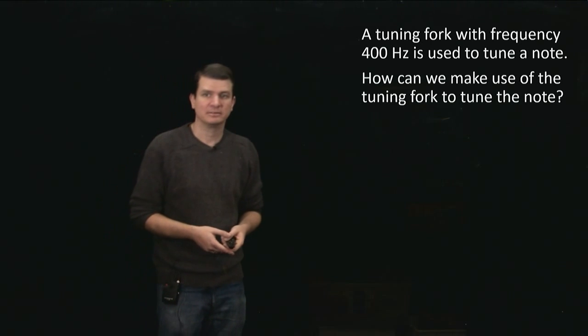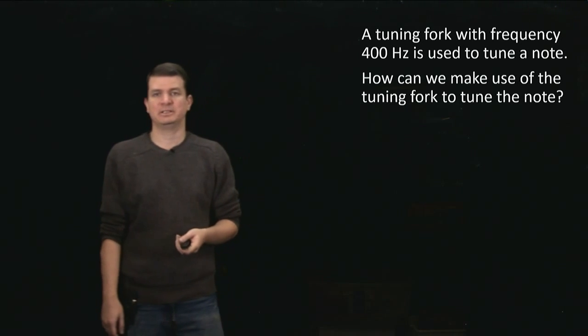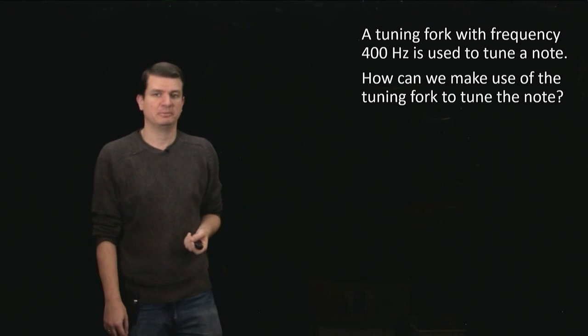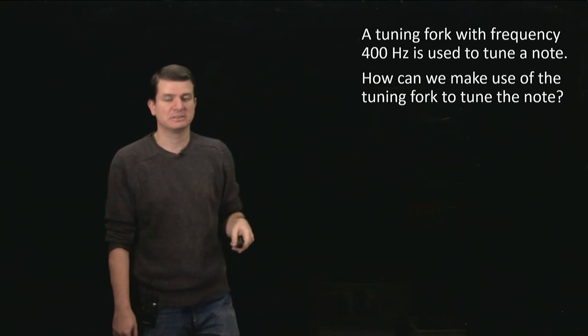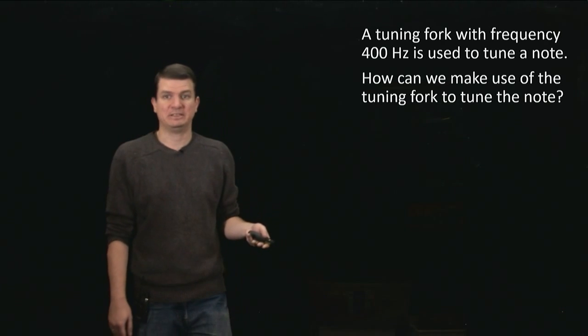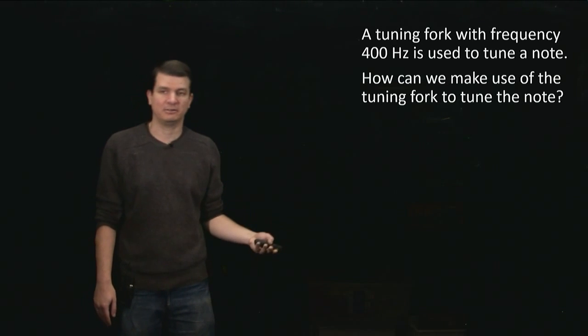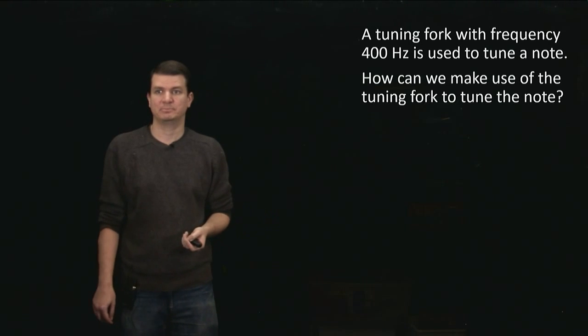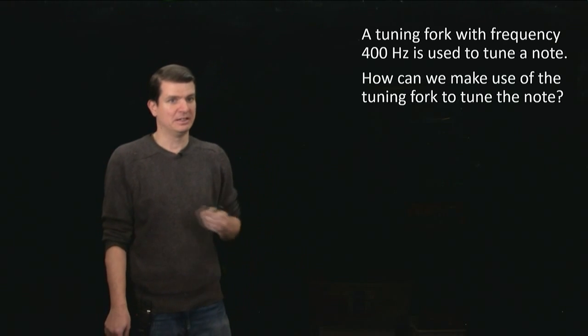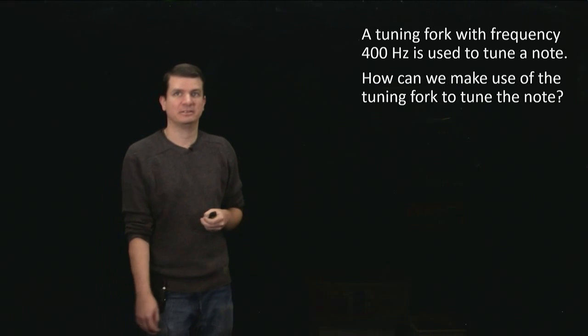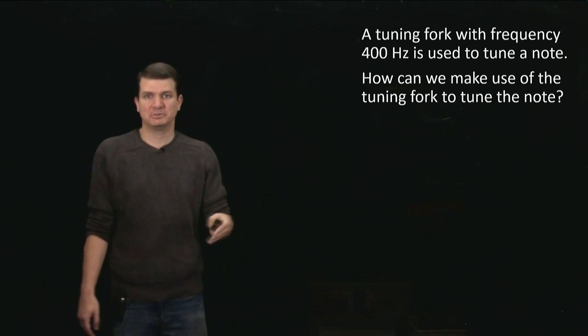The way that we do that is by playing both the note as it's currently tuned and the tuning fork at the same time. If those frequencies are close, they will generate beats, and those beats will enable us to tell that they're not actually the same note. Because if you play 400 hertz and say 405 hertz, you're not really going to be able to hear the difference, but if you play them at the same time, you'll get beats.